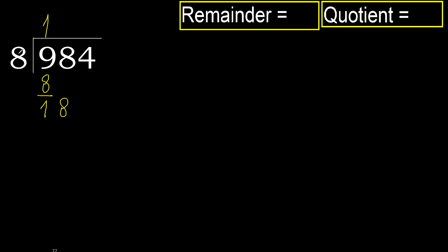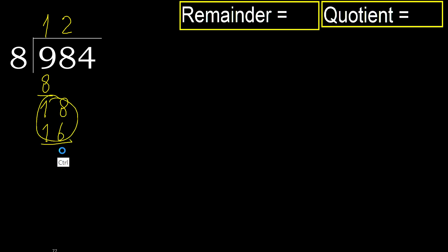18. 8 multiplied by 3 is 24 — 24 is greater. Multiply by 2 is 16, which is not greater. Subtract. Next.